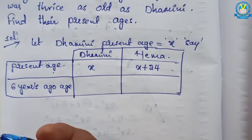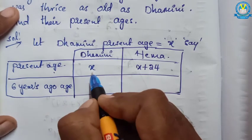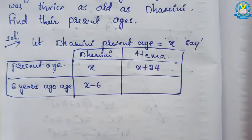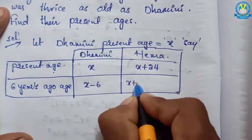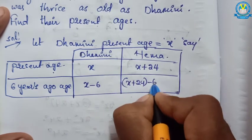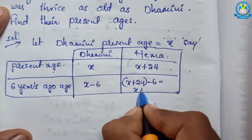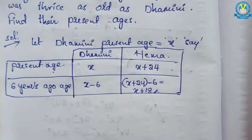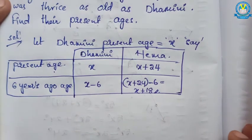6 years ago, Domini's age is x minus 6, because subtraction is there — 6 years before. Hama's age 6 years before: x plus 24 is the present age, minus 6, so that is x plus 24 minus 6 equals x plus 18. So x plus 18 is Hama's age 6 years ago.